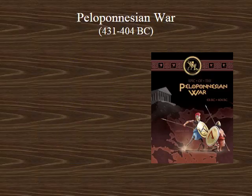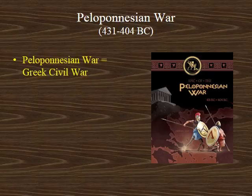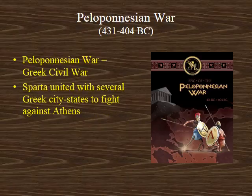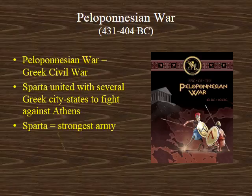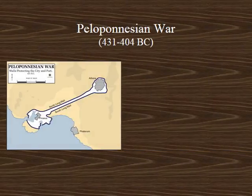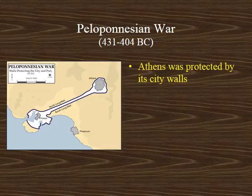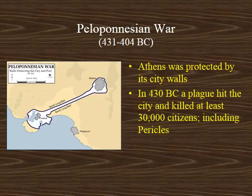The Peloponnesian War is the name for the civil war among the different Greek city-states. Once again, Sparta dropped its policy of isolationism because they saw the Athenians as a threat. They united with many other Greek city-states to fight against Athens. Sparta once again had the best land forces while the Athenians specialized in their navy. Another advantage held by the Athenians were the great city walls that protected not only the city of Athens but their port as well, shown here on this diagram. However, shortly into the war, a plague raged through the city and killed several thousand citizens, including their great political leader Pericles.